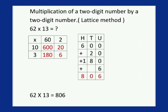Now let's add the highlighted numbers. 600 plus 20 plus 180 plus 6 is equal to 806. So 62 multiplied by 13 is equal to 806.